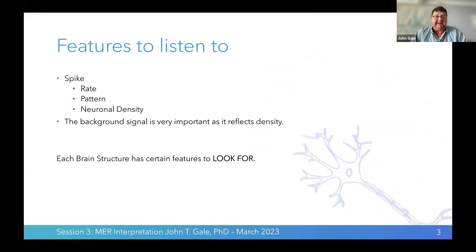The features we look at with spikes or action potentials include how fast they fire — their rate — and whether there's a pattern: sometimes very regular, other times very irregular. The density of neurons, i.e. how many neurons we can see in a recording, also gives information. In the putamen, neurons are fairly spread out, so we don't record many simultaneously. In the subthalamic nucleus, it's a very compact structure with many neurons close together, so we often record many neurons at the same time.